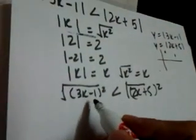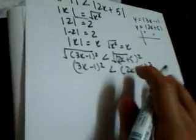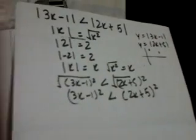Squaring both sides, we get (3x - 1)² less than (2x + 5)². Then expand and simplify — you'll get a quadratic inequality. Solve that and you will get the values. Those are two methods: the graphical method and this algebraic squaring method.